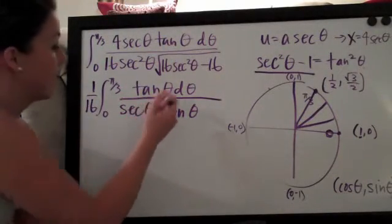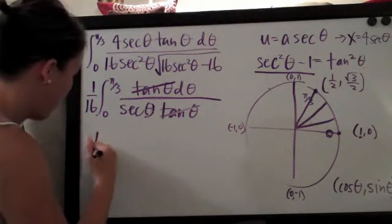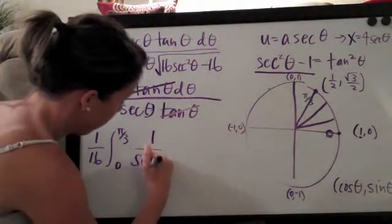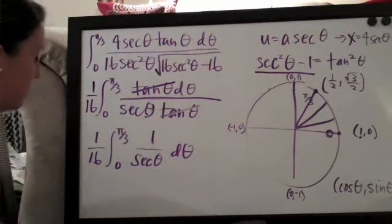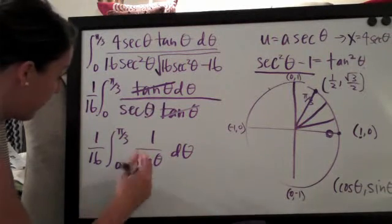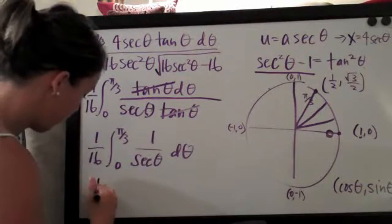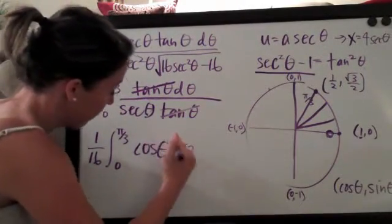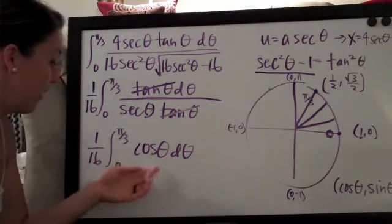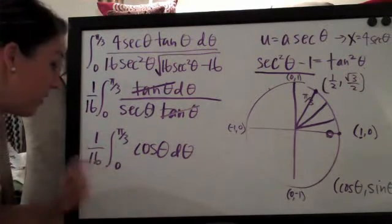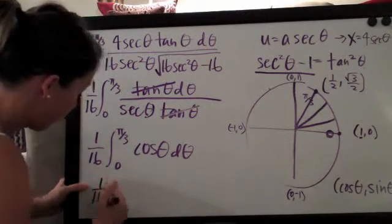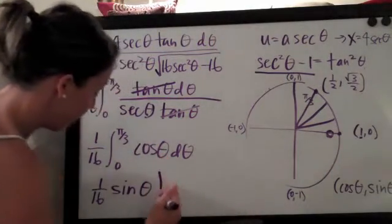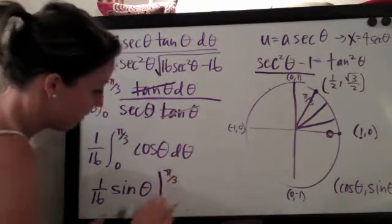Now, as you can see, we can cancel out tangent theta. So we'll be left with one sixteenth times the integral on the range zero to pi over three of one over secant theta d theta. And this is where we just start getting greedy. One over secant theta is the same thing as cosine theta. And as we know from the established formula, the integral of cosine theta is sine theta. So we're looking at one over sixteen times sine theta, and we need to evaluate this on the range zero to pi over three.